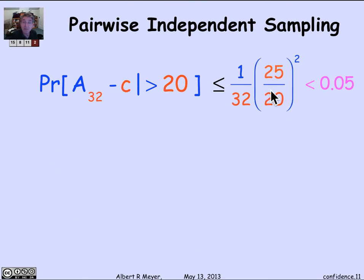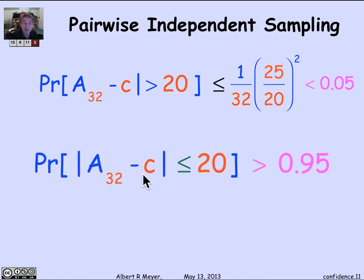When I do that, I come out with this calculation that says that the probability that my average minus C was greater than 20, that my A_32, which we said was 180, was more than 20 away from the truth, is less than 0.05. Or flipping it around, the probability that my average is within 20 of the truth is greater than 0.95.